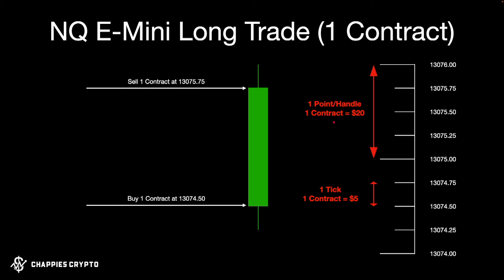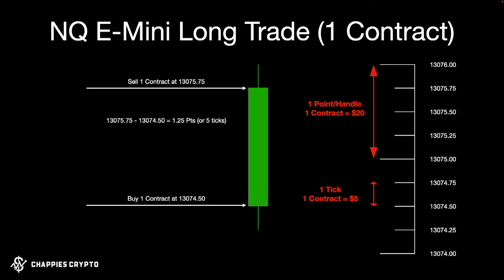In this trade, we bought one contract at the entry price and sold one contract at the exit — price moved up one, two, three, four, five ticks, or 1.25 points. To calculate the profit: take the top price minus the bottom price to get the difference of 1.25 points, or five ticks. Profit equals 1.25 points times twenty dollars per point — twenty dollars being the value of one contract — giving us twenty-five dollars profit on one contract.